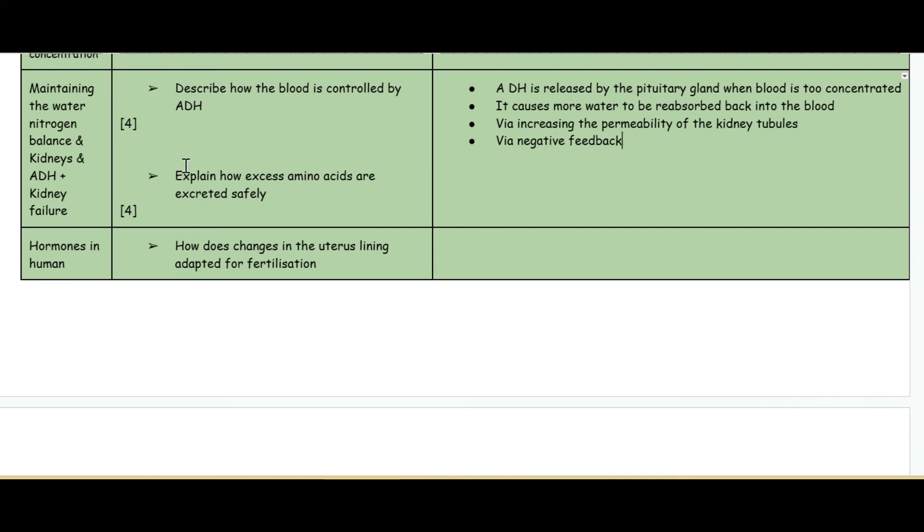The next question: explain how excess amino acids are excreted safely. In the liver you've got the amino acids which are deaminated - keyword here, deaminated - because amino acids are toxic in excess. Ammonia is formed but ammonia is also toxic, so ammonia is then converted to urea for safe excretion via the kidneys as urea. Looking at the life cycle of proteins: proteins are broken down into amino acids, amino acids are deaminated into ammonia, and then ammonia is turned into urea which is turned into urine.